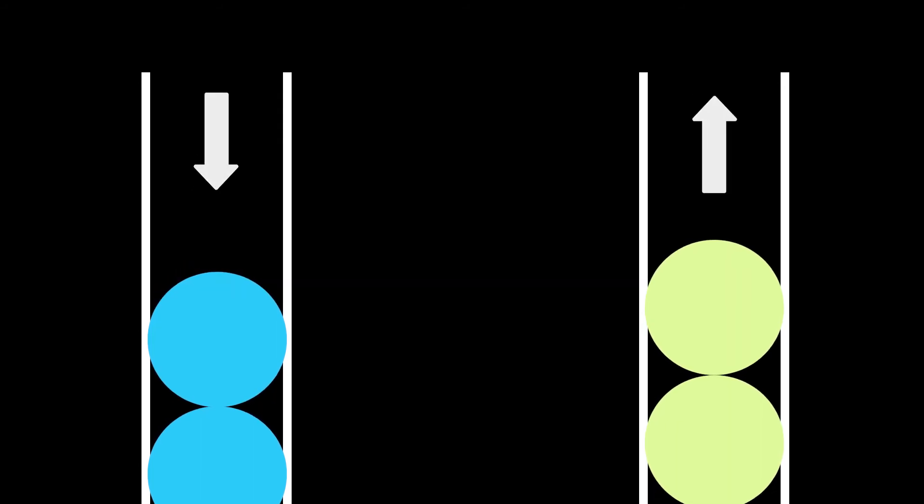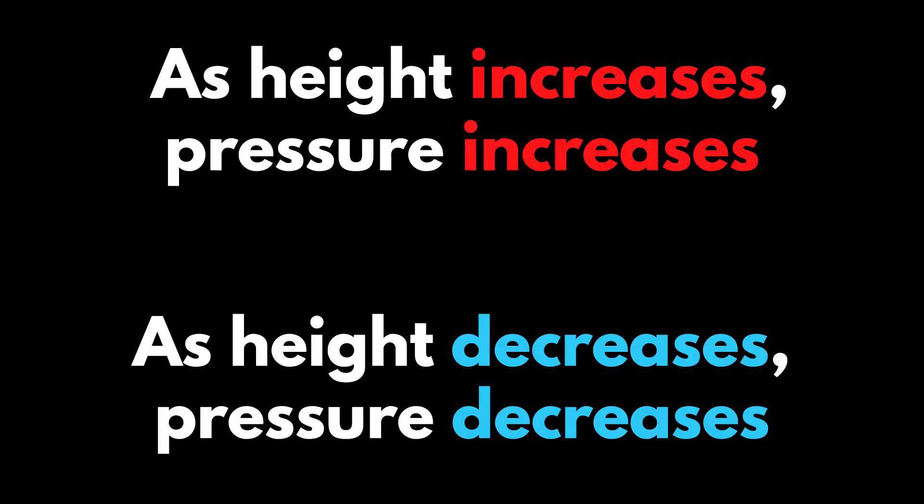This works because as the fluid on the left side raises, the fluid on the right side also lowers, which if you look at the equation and understand how the height affects pressure, this makes complete sense.